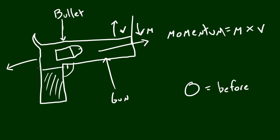And in comparison to the bullet itself, the gun is this big chunk of metal. So, it has a very high mass. And in comparison to the speed or velocity of the bullet, it has a very low velocity.